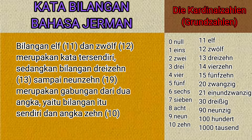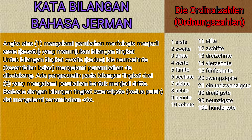Di sebelah kanan ada tabel yang berisi angka Ordinalzahlen atau Ordnungszahlen sebagai berikut: Erste, Zweite, Dritte, Vierte, Fünfte, Sechste, Siebte, Achte, Neunte, Zehnte, Elfte, Zwölfte, Dreizehnte, Vierzehnte, Fünfzehnte, Zwanzigste, Einundzwanzigste, Neunundzwanzigste, Hundertste.